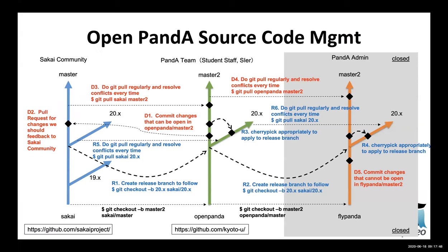During the upgrade, we used two GitHub repositories. One is OpenPANDA, which is an open repository, and the other is FlyPANDA, which is the closed repository for operation. By doing so, we are expecting that we can easily contribute our modifications to the Sakai repository this year. That's all.